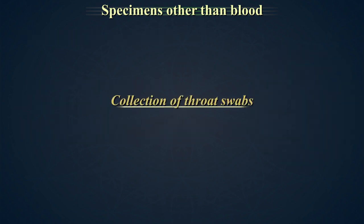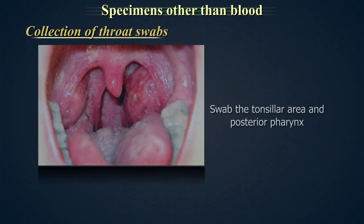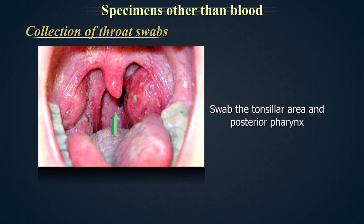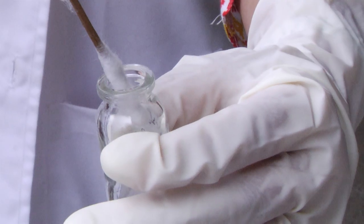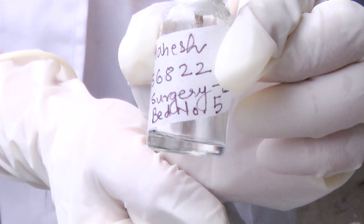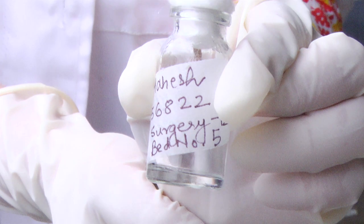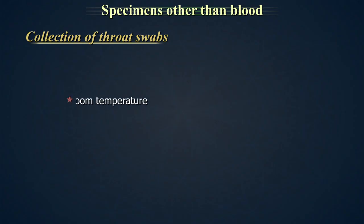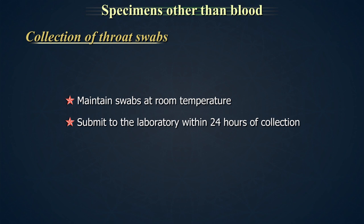Collection of throat swabs: swab the tonsillar area and posterior pharynx. Place the swab into the transport media. Label the swab with the patient's full name, date or unique identification number, source of specimen, and date and time of collection. Maintain swabs at room temperature and submit to the laboratory within 24 hours of collection.